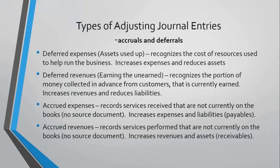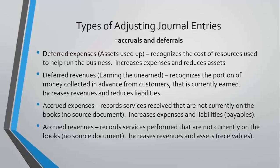Adjusting entries are often the hardest to deal with, and we use the language of accruals and deferrals. On the deferral side, when we purchase something like supplies, we often set it up as an asset because it will benefit the future — we're deferring the expensing of supplies by putting it into an asset account first. This is what we call assets used up. Depreciation falls in this category, as well as prepaid insurance and office supplies. Normally, deferred expenses mean we debit an expense and credit either an asset or a contra asset.